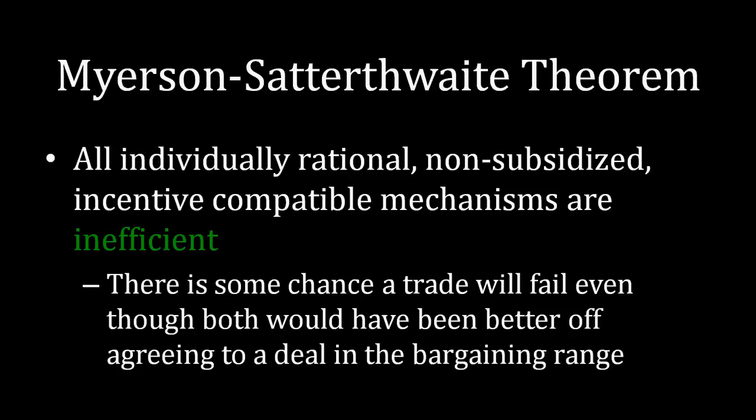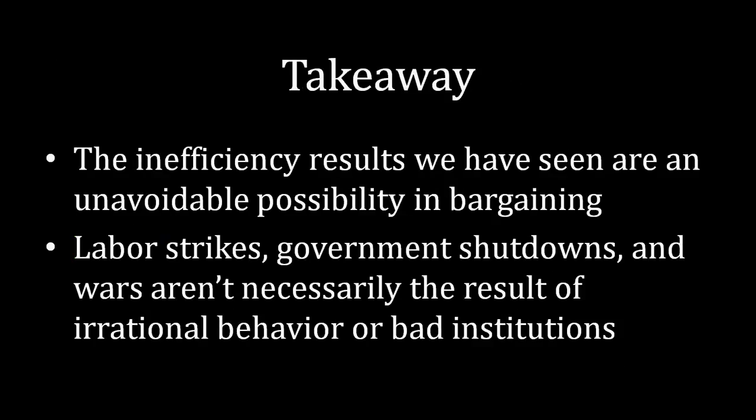Let me recast what we've found with the Meyerson-Satterthwaite Theorem. It says that the inefficiency results we've been seeing in games with asymmetric information — with incomplete information — are unavoidable in negotiations. Any time you have uncertainty about the other side's valuation, and they are uncertain about yours, you're stuck in a situation where there is some chance negotiations won't work out, even though, after the fact, if both parties revealed their valuations, they actually could have reached an agreement.